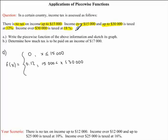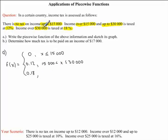Now we have our last interval. When our income is over $30,000, it's taxed at 18%. So f of x is equal to 0.18 — that is 18% written as a decimal. And we know our variable is over $30,000, or in other words, x is greater than $30,000.